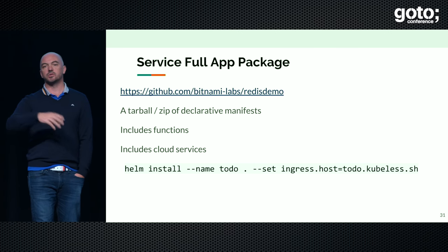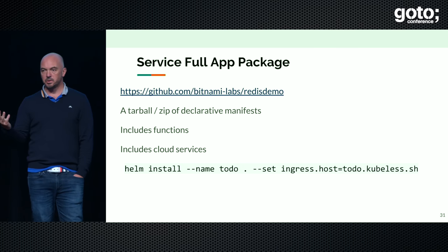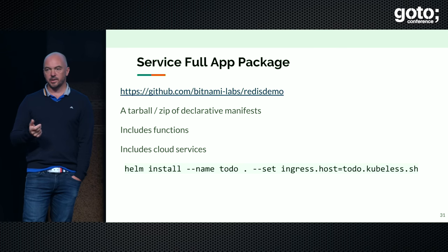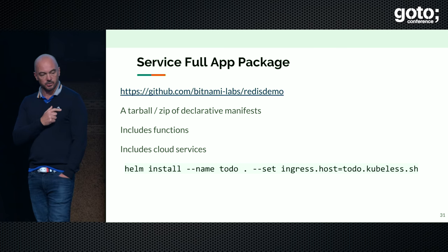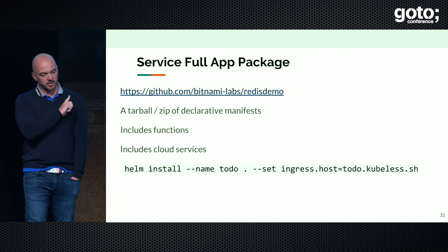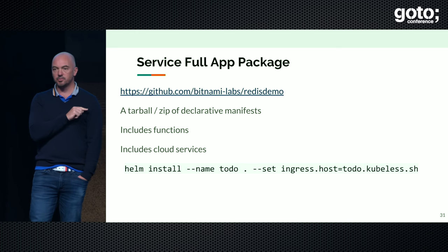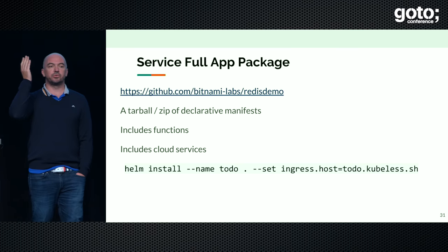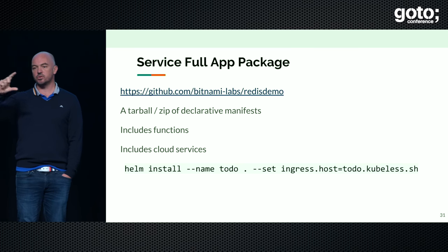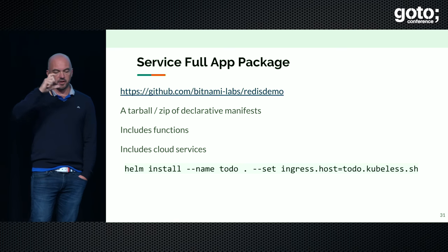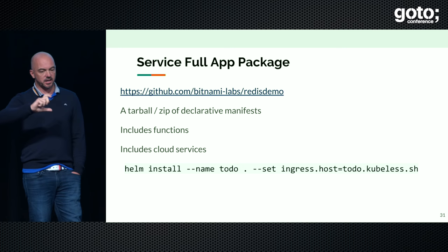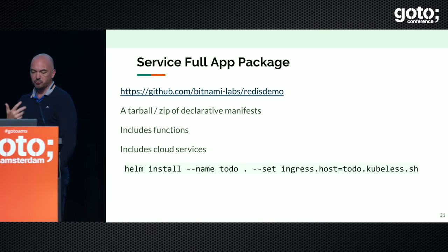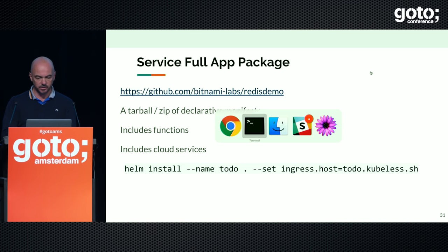That's a very simple example — just one function. You can imagine having way more than one function, many different repos, different types of triggers defined exactly the same way. There's a different aspect where you actually create a package, and that's when we talk again about serviceful application packaging. There is a repo at github.com/bitnami-labs/redis-demo I invite you to look at. It's a to-do application with a Redis backend. You create routes — to create to-dos, delete to-dos, and so on — using functions. The functions are deployed thanks to Kubeless. Redis is deployed via a Helm chart. And the entire thing is packaged as a chart.